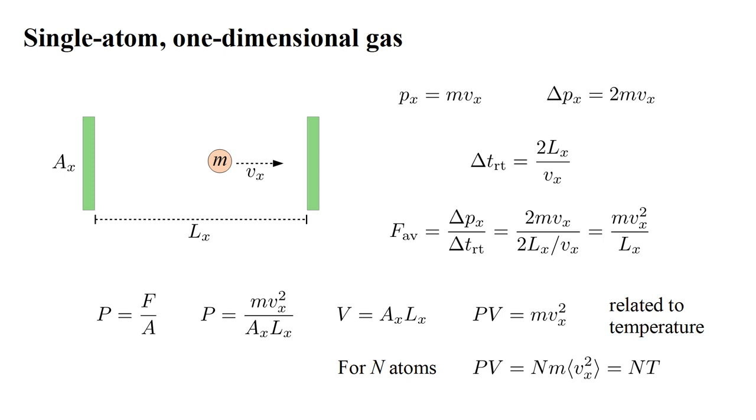But then, room temperature would be about 4 times 10 to the minus 21 joules, which isn't very practical for day-to-day use. In order to keep the Kelvin and Celsius scales, we add the constant K, called Boltzmann's constant. It has units of joules per Kelvin.